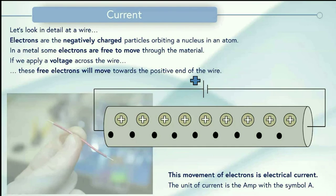This movement of electrons in a wire is electrical current. The unit of current is the amp and it has the symbol capital A.